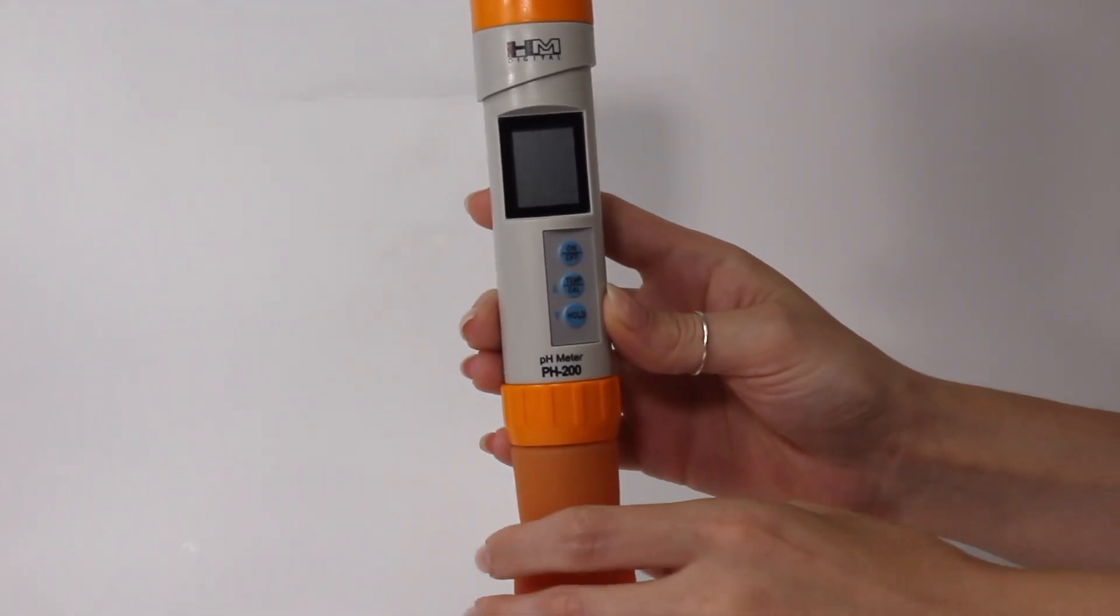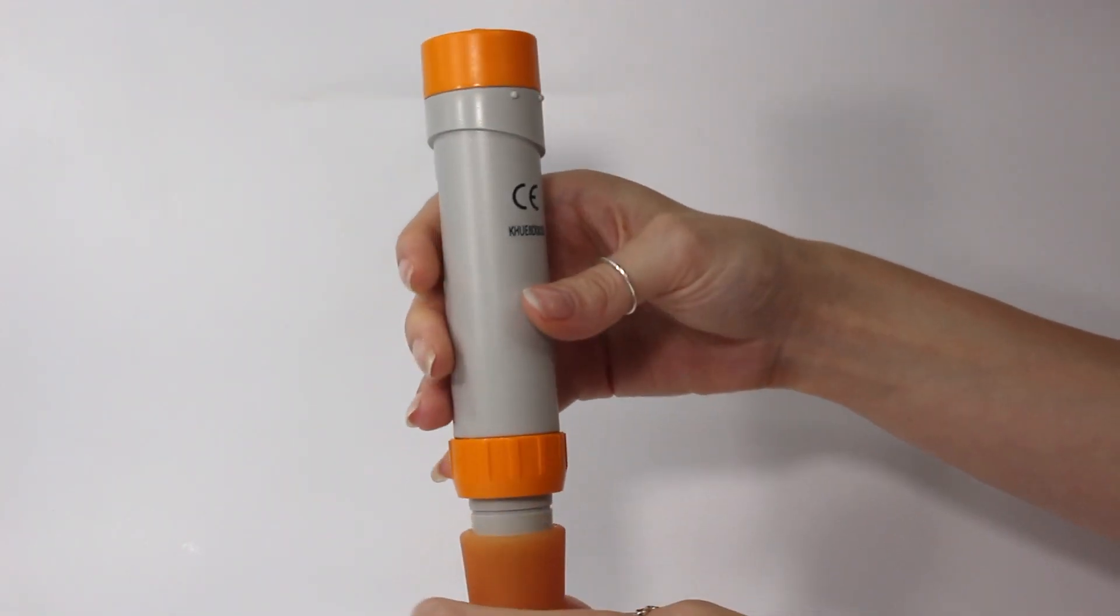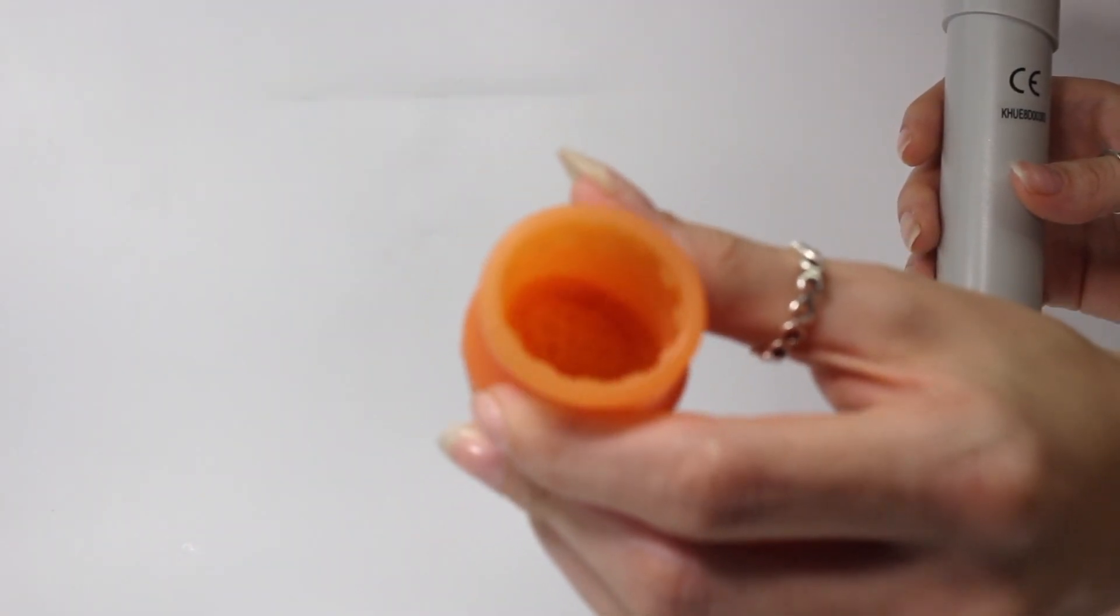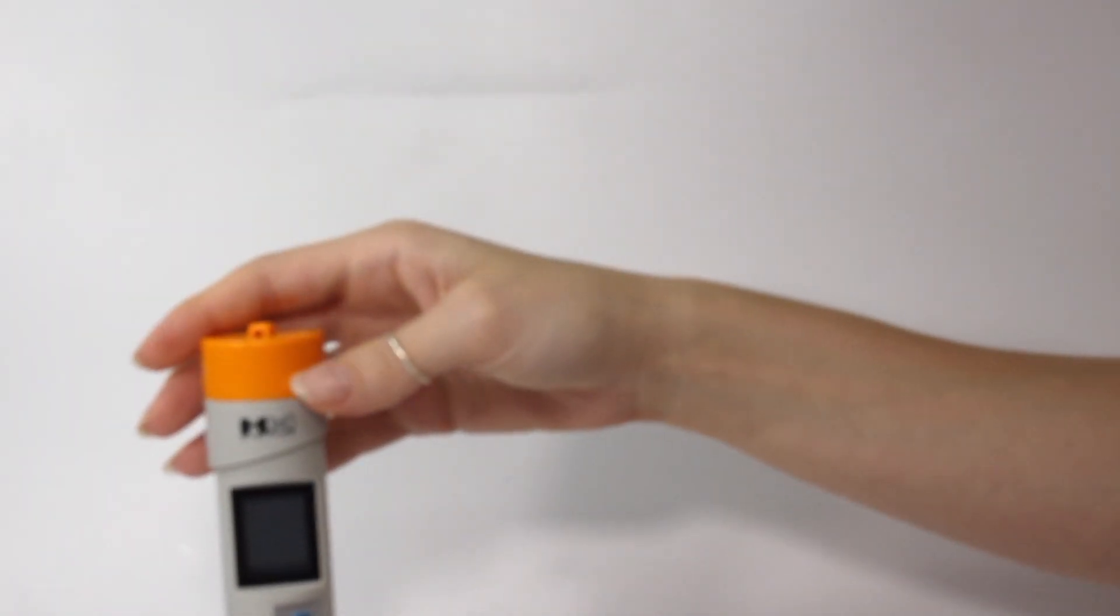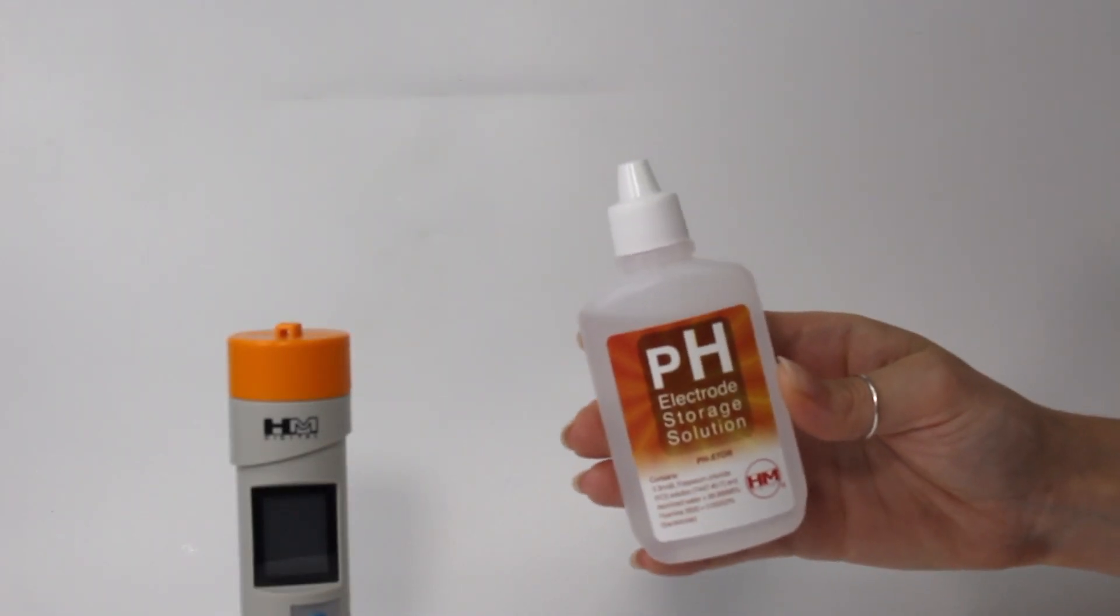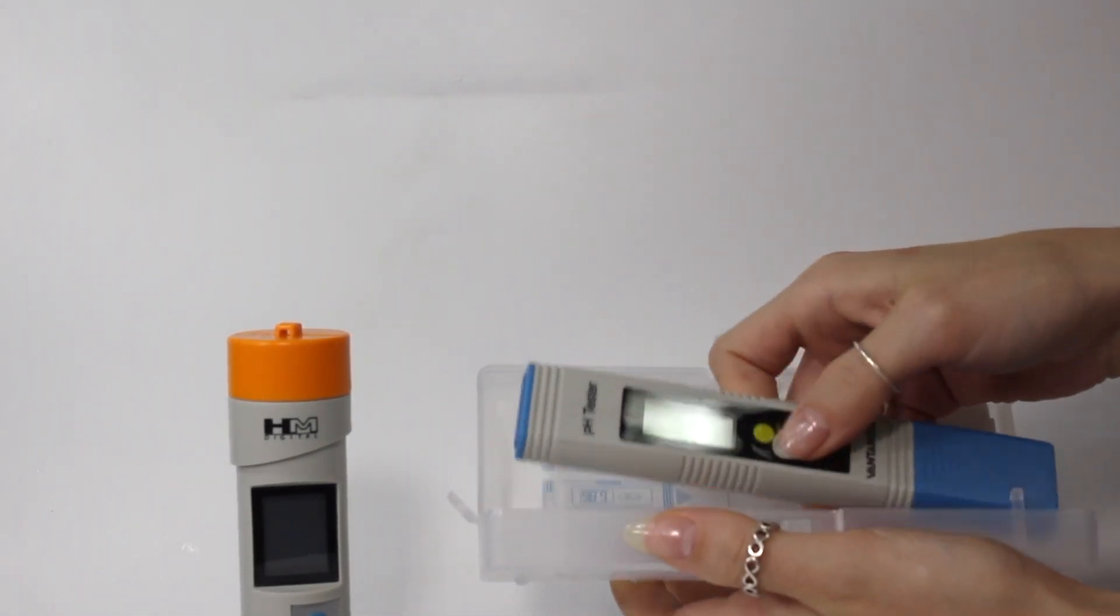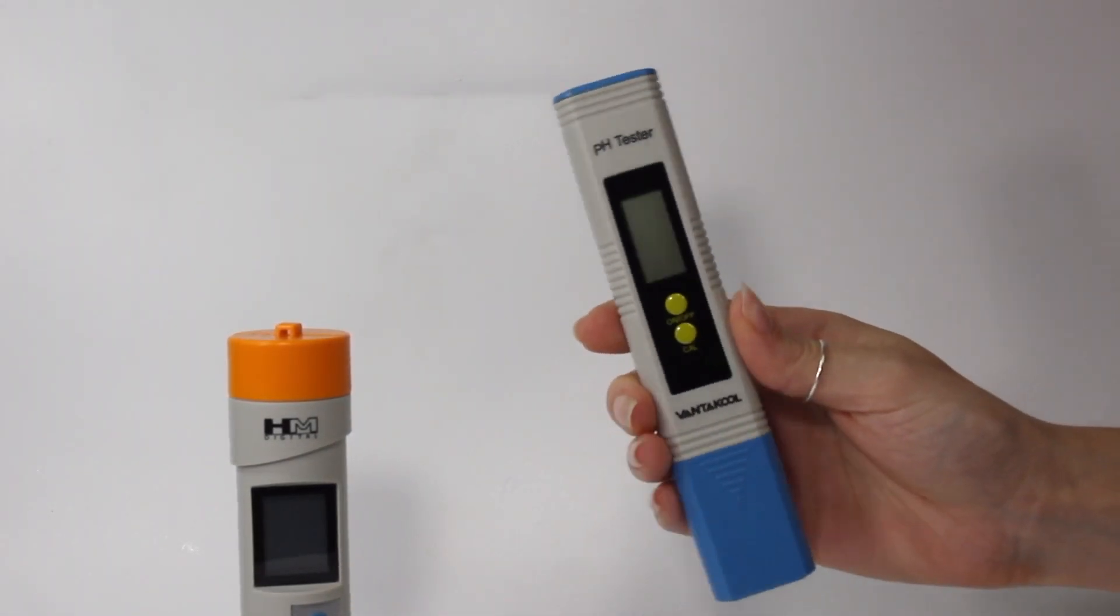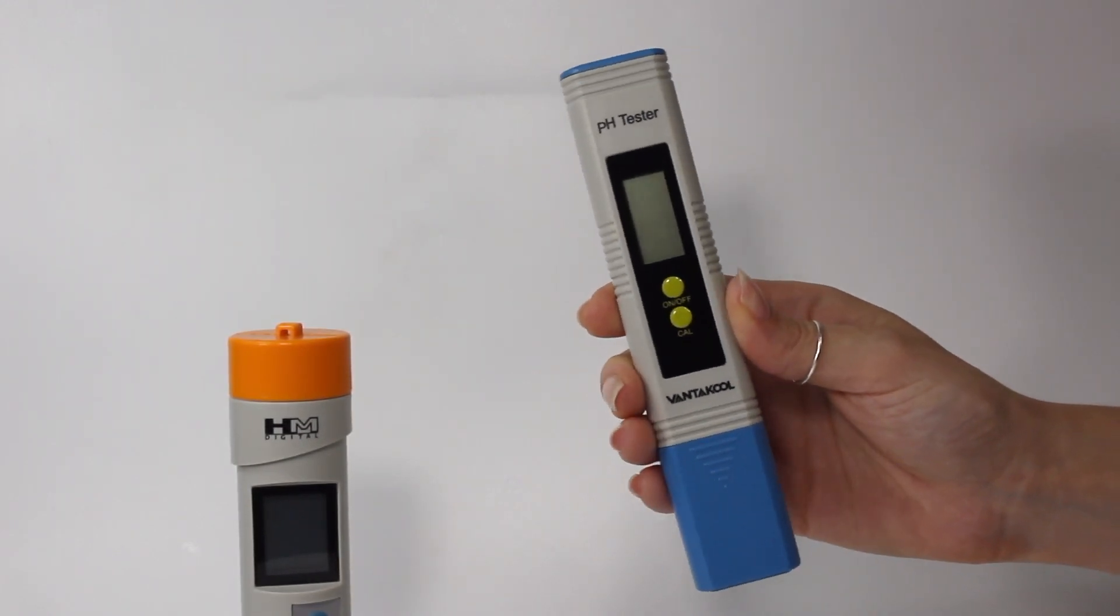It actually has a little sponge in the cap that you have to keep saturated in a pH electrode storage solution. I'll have the pH electrode solution linked down below, this pH meter linked down below, the calibrating solution linked down below, and also the cheaper pH meter I'm going to be comparing this more expensive pH meter to in the description box below.